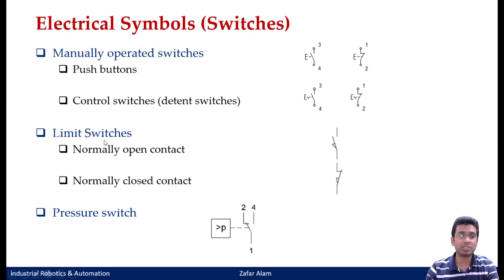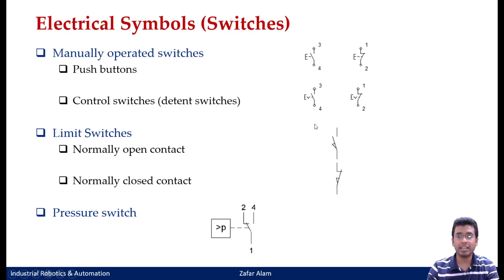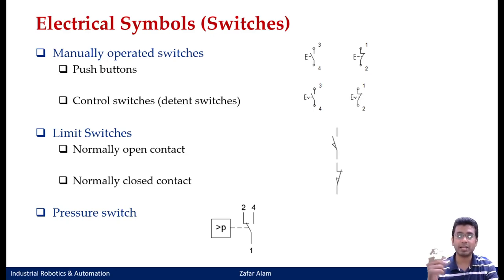Then you have your limit switches. I told you they are in the form of roller valves placed at either end of your linear actuators, to sense either the retracted position or the completely extended position, and these are generally actuated by a cam mechanism. These are the symbols for it. Again, they can be normally open contact type — whenever your roller valve is hit by a piston rod, they either make a circuit or break a circuit. You also have the normally closed contact type, as seen here.